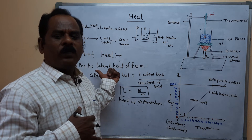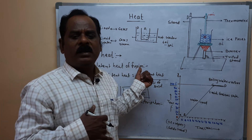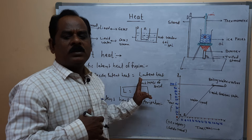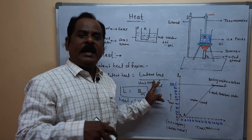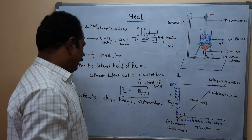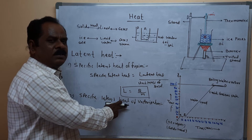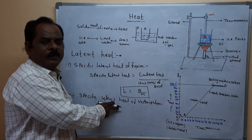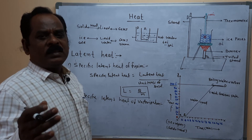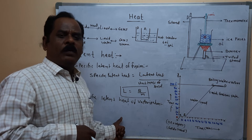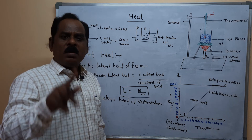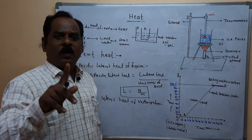The specific latent heat of fusion or melting is the amount of heat energy absorbed at a constant temperature — called the melting point — by unit mass of solid to convert into liquid state. The specific latent heat of vaporization is the amount of heat energy absorbed at a constant temperature — called the boiling point — by unit mass of liquid to convert into gaseous state.